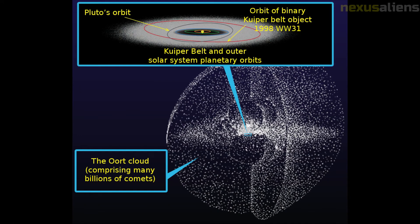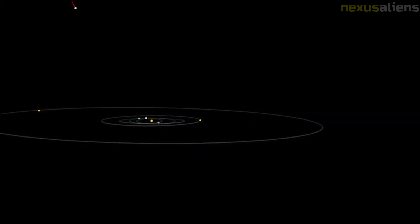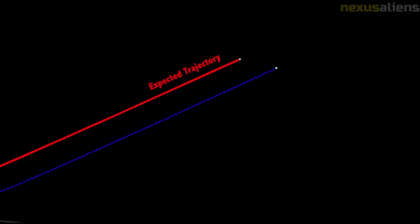Oumuamua appears to have come from roughly the direction of Vega in the constellation Lyra. The incoming direction of motion of Oumuamua is 6 degrees from the solar apex, which is the most likely direction from which objects coming from outside the solar system should approach. On 26 October, two recovery observations from the Catalina Sky Survey were found dated 14 and 17 October.